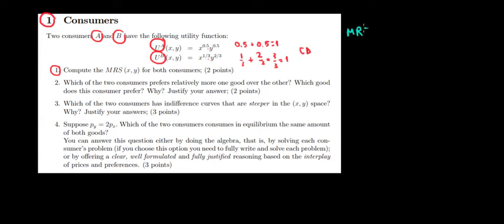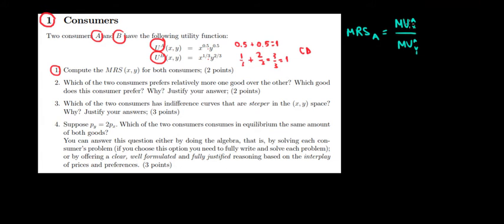The marginal rate of substitution for consumer A is the marginal utility of consumer A with respect to good X, divided by the marginal utility of consumer A with respect to good Y. Marginal utility is the derivative of the utility function — so the derivative with respect to X. We have to do some differentiation here, so let's do it.